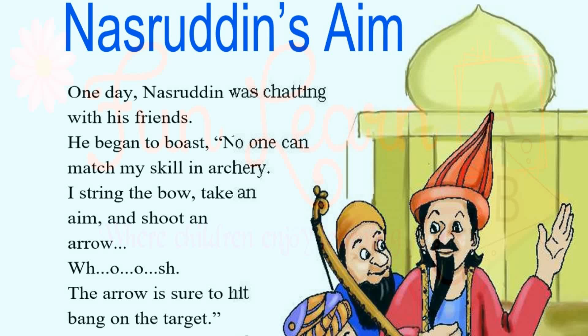Next, the story: Nasiruddin's Aim. Nasiruddin was a king who was very famous. He was so well known that there are many books about his stories. Today we will read a story about Nasiruddin's aim. 'Aim' means the act of targeting something. He says aim.